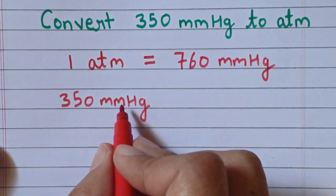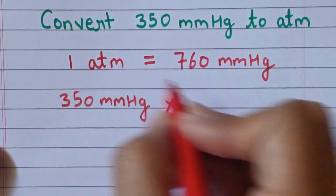So here we will write 350 mmHg multiply by one atmosphere